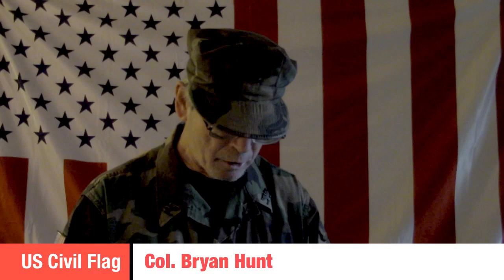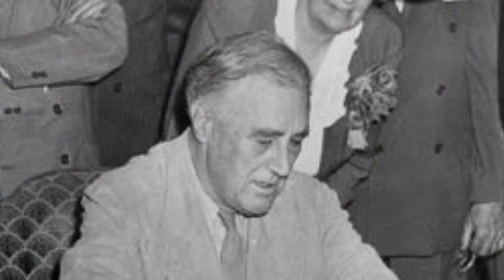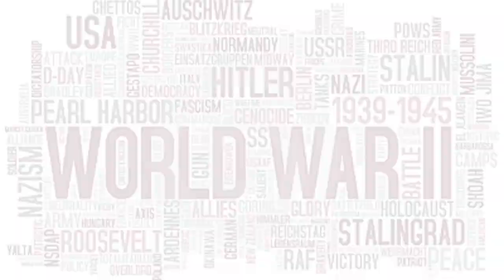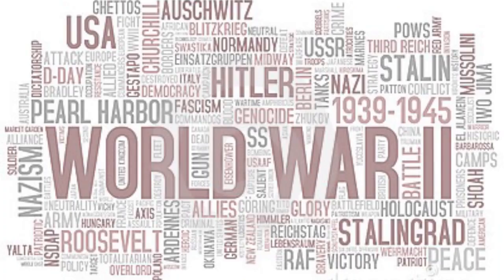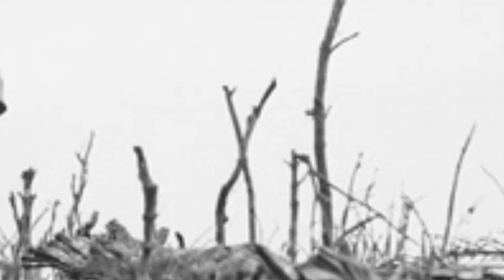This flag has been in existence since 1791. It has been suspended twice — the first time in 1861, brought back in 1865, then re-suspended by the 1941 War Powers Act. When America went to war with Japan and with the Germans during World War II, the Admiralty Law, or Law of the Flag, was imposed by the 1941 War Powers Act, which suspended the Civil Flag of Peace.